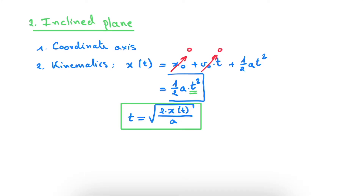Before we can calculate t, we need to find both x(t) and a. This acceleration must be in the direction of motion, since we are dealing with one-dimensional motion. Let's start with a, the acceleration in the direction of our motion — the x-direction. We need the magnitude of this acceleration vector. Let's go back to our sketch to see how we can get this acceleration.